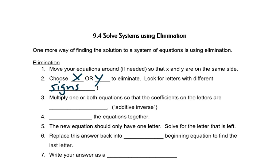You'll multiply one or both equations so that the coefficients on the letters are opposites, or additive inverses. You'll add the equations together. The new equation will only have one letter. One of the letters will cancel out.